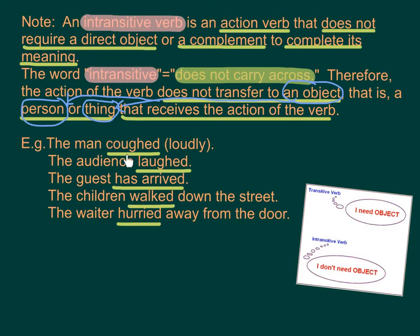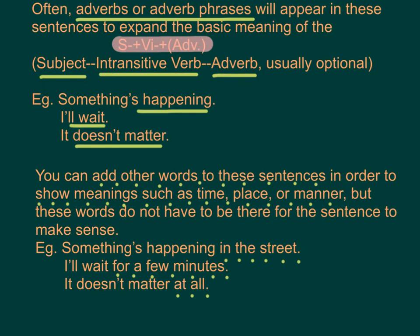For example: 'The man coughed loudly. The audience laughed. The guest has arrived. The children walked down the street. The waiter hurried away from the door.' Often, adverbs or adverb phrases will appear in these sentences to expand the basic meaning. The structure is: Subject + VI + Adverb (usually optional).